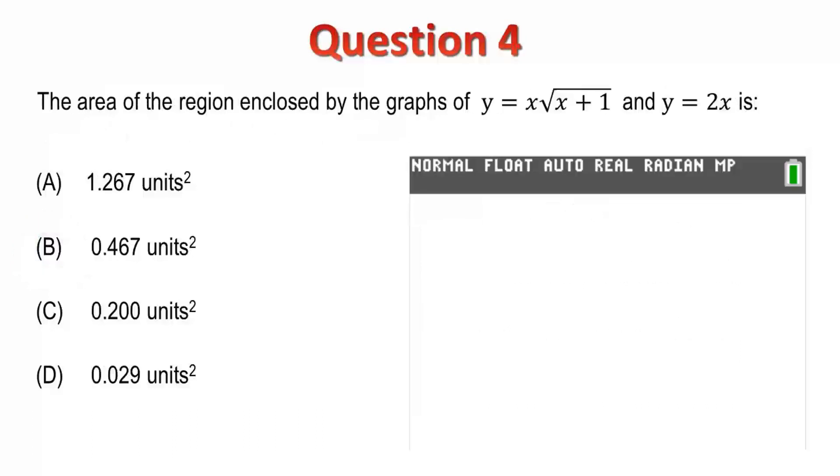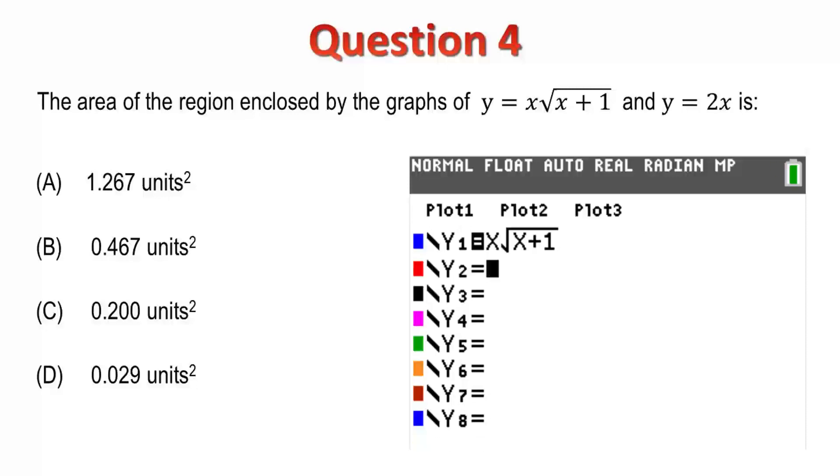Question 4. We are asked to find the area bounded by the two curves, y equals x root x plus 1, and y equals 2x. To answer this question, you need to know the boundaries of the region. This requires us to find where the graphs intersect one another. It should be clear that the graphs intersect when x equals 0. To locate other points of intersection, I'll graph the two functions.